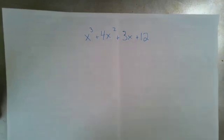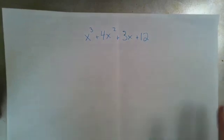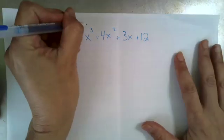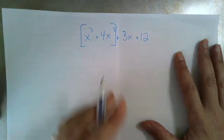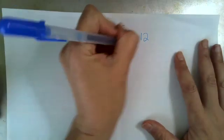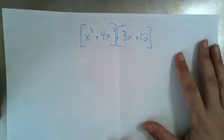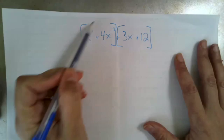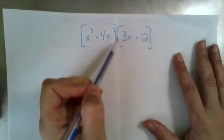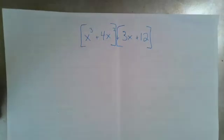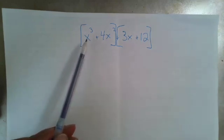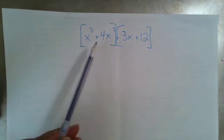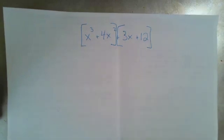Factoring by grouping looks like this. You start by grouping your polynomial into two halves. Now I have this first group and I have this second group. What you are asking yourself is, for each individual group, what is the greatest common factor to these two terms?